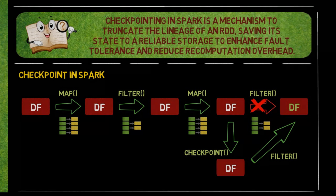Checkpointing involves saving the state of RDDs to durable storage, such as HDFS, S3, or local disk, to reduce the recomputation overhead and mitigate the risk of lineage-related failures.